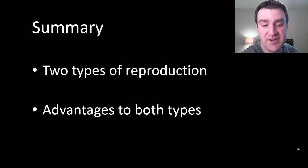And so what we just kind of covered very briefly are just two types, sexual and asexual reproduction. And we tried to explain why there are advantages to both types of reproduction. And that's why many organisms can reproduce both ways.